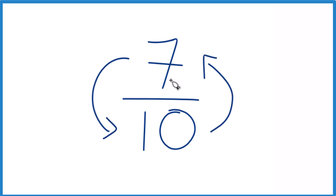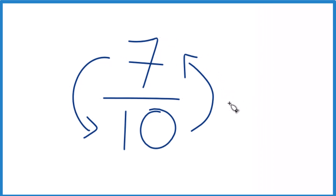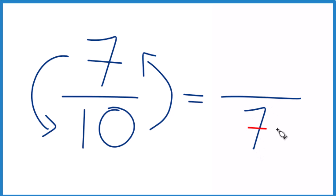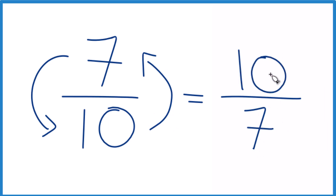So for 7 tenths, when we find the reciprocal, we put the 7 on the bottom — that becomes our denominator. And we move the 10 to the top. So we end up with 10 sevenths, and that's the reciprocal for 7 tenths.